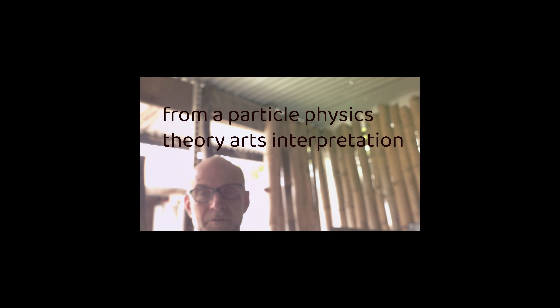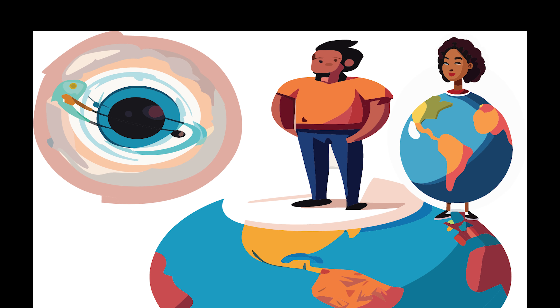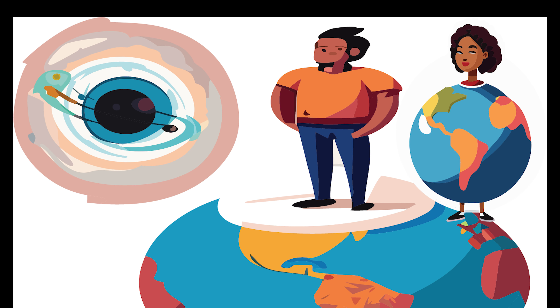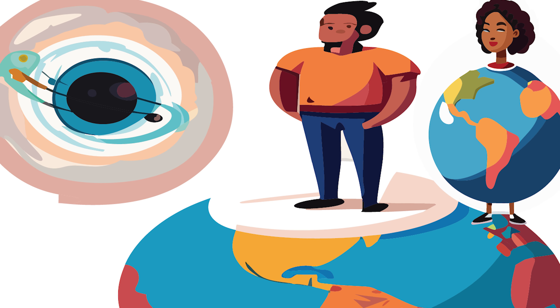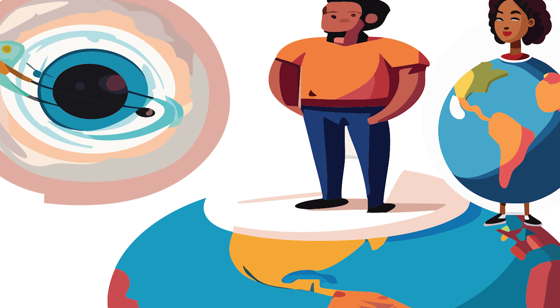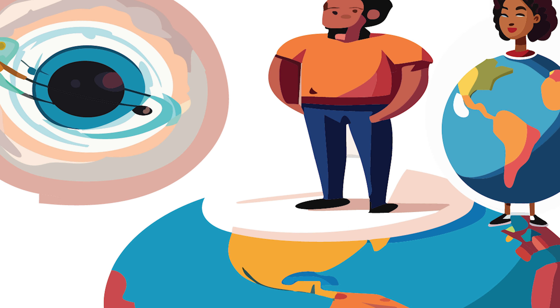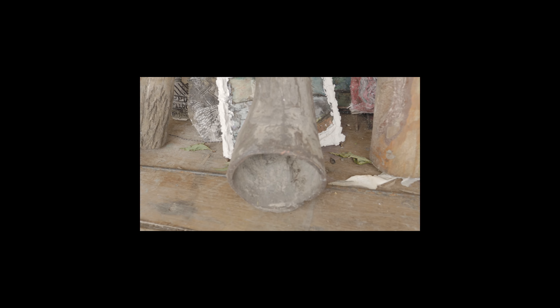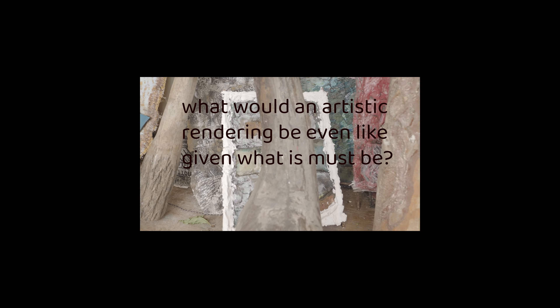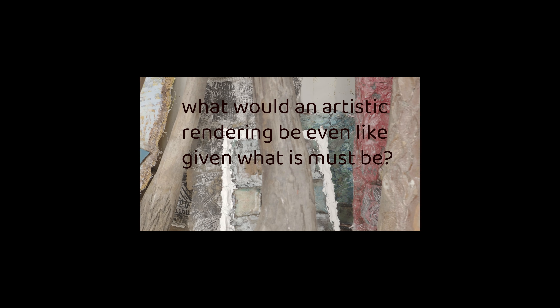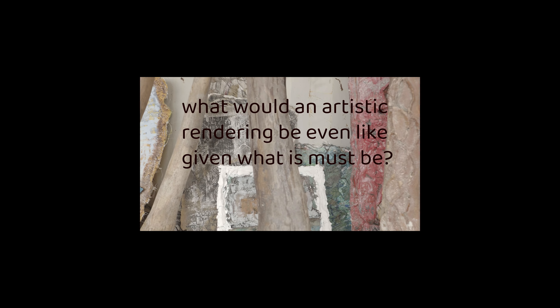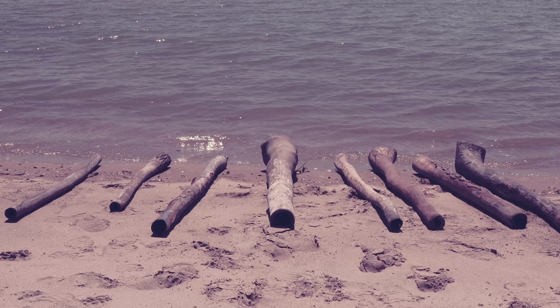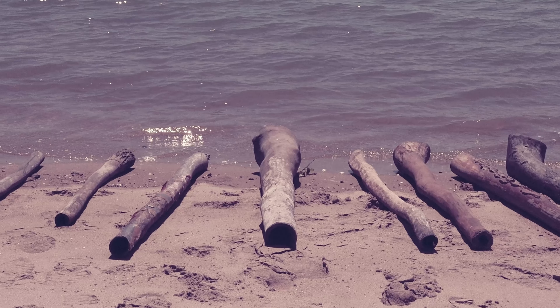What we have is material stuff, dark energy, and dark matter. These are the three sort of variables within a universe. So what would an artistic rendering be like through a sculptural form? One way I've come up with is through the hollow wood approach, where you've got these hollow pieces of wood.